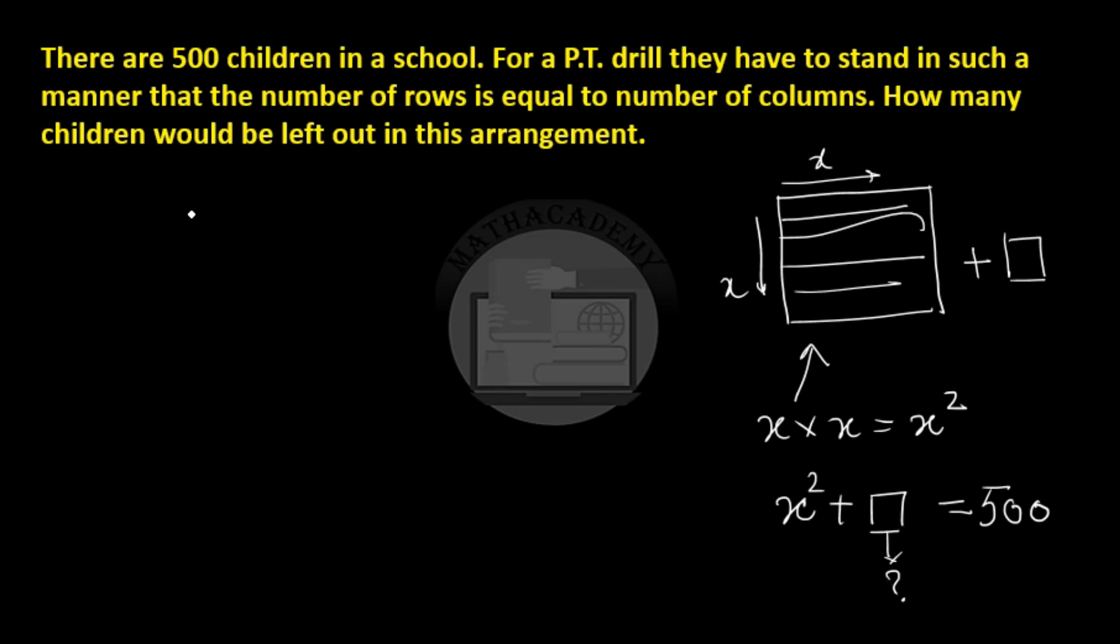So what we do is first we take the number of children and we will try to find the square root of this. We will form the pairs, so 2 square is 4. 5 minus 4 is 1. We take down both the zeros. 2 plus 2 is 4. Now we do 42 times 2 is 84. We are left with 16 here and we add 2 here to get 44.